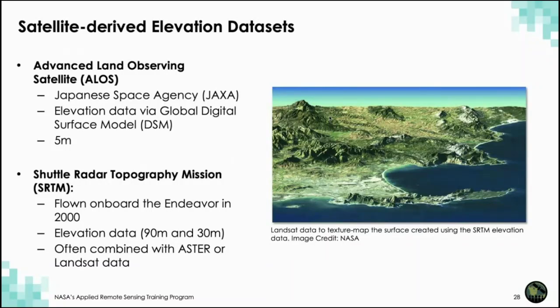There are also elevation datasets that can be particularly useful to identify landscape characteristics. Since 2014, the Japan Aerospace Exploration Agency, or JAXA, has provided a 3D product covering the global land area at about 5-meter surface elevation — a really useful product. The Shuttle Radar Topography Mission, or SRTM, which flew in 2000, provides elevation data as well. It can often be combined with optical data to produce maps that show optical information of vegetation alongside the elevation information from SRTM.